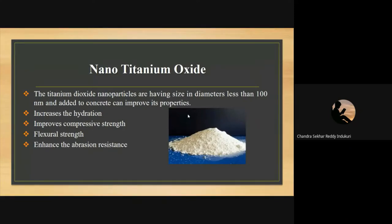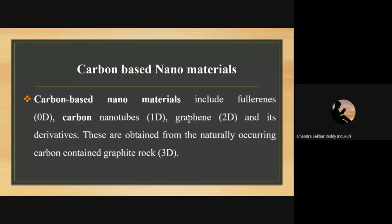Titanium oxide nanoparticles are less than 100 nanometers in diameter. Addition of this material to concrete increases hydration, improves compressive strength, improves flexural strength, and enhances abrasion resistance. Carbon-based nanomaterials include fullerenes — zero-dimensional nanomaterials; carbon nanotubes — one-dimensional nanomaterials; and graphene and its derivatives — two-dimensional nanomaterials. All carbon-based nanomaterials are obtained from graphite, a three-dimensional structure containing a high percentage of carbon, from which all these carbon-based materials can be derived.